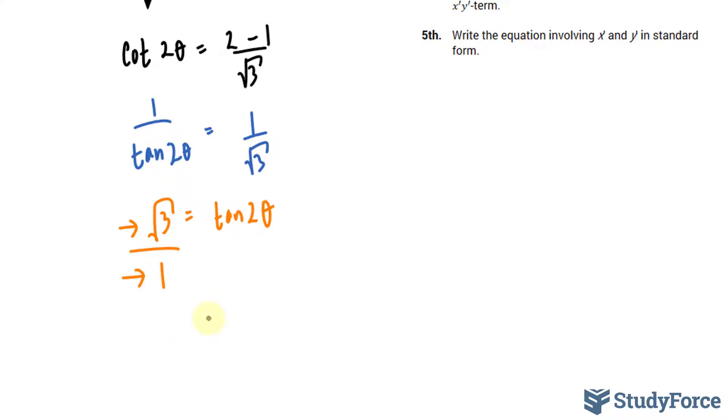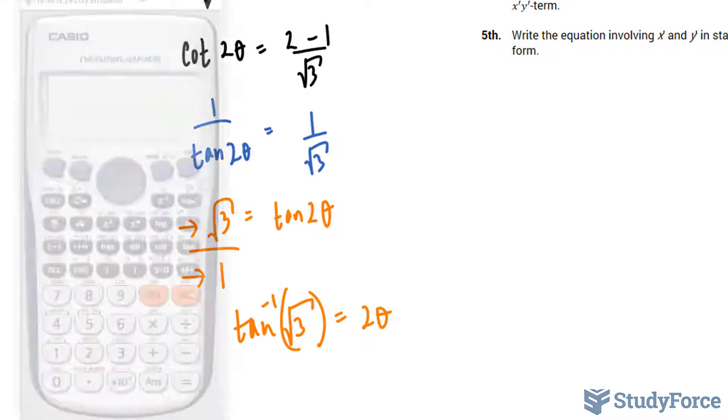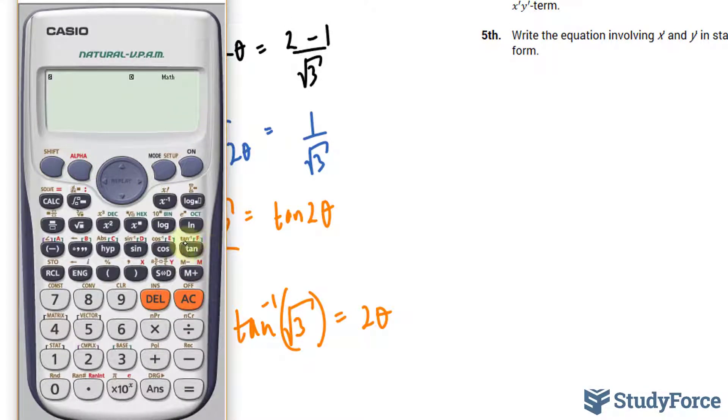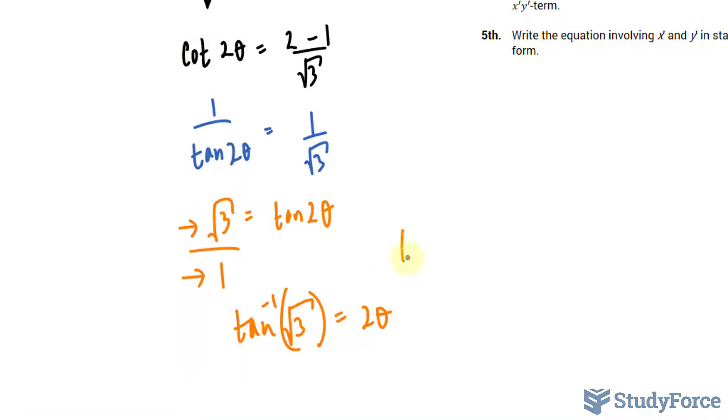So to find out what theta is, I'll take inverse tangent of both sides. Inverse tangent of square root of 3 is equal to 2 theta. And then dividing both sides by 2 should give us our angle in degrees. So let's go ahead and use our calculator. We have inverse tangent of the square root of 3 divided by 2. And our angle, theta, is equal to 30 degrees.